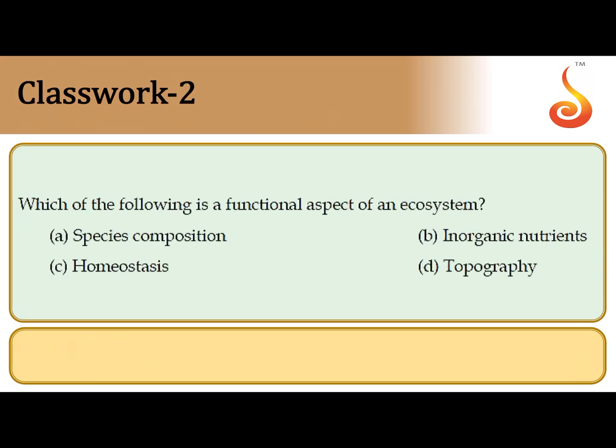The second question says: which of the following is a functional aspect of the ecosystem? Most of the options given here are structural aspects. However, maintenance of a constant environment, maintenance of stability, maintenance of a balance in the ecosystem, which is referred to as homeostasis, is a functional aspect. So the correct answer is option C, that is homeostasis.